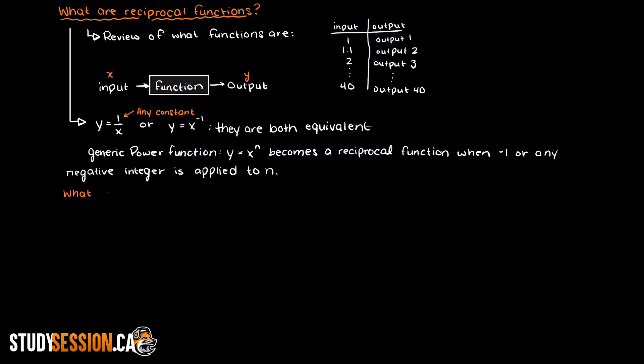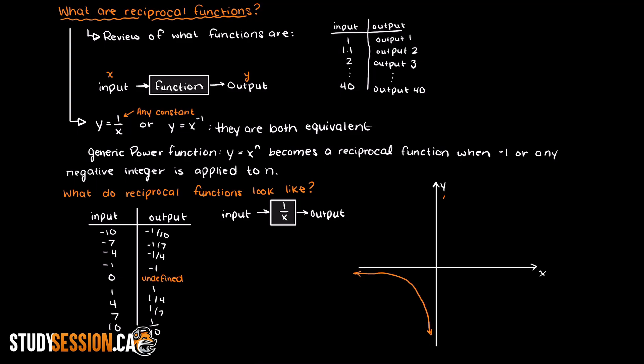So what do you think these functions will look like graphically? Well, the best way to understand this is through testing a bunch of input values and seeing what output values are received. As you can see here we received this very interesting shape with parabolas present in quadrants 1 and 3 of our graph.